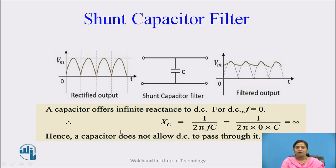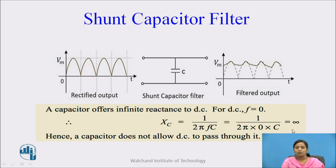The capacitor offers infinite reactance to DC because DC has zero frequency. The reactance of capacitance is equal to 1 upon 2πfc, which equals 1 upon 2π into frequency 0 into capacitance, which equals infinite. Hence, the capacitor does not allow DC to pass through it.